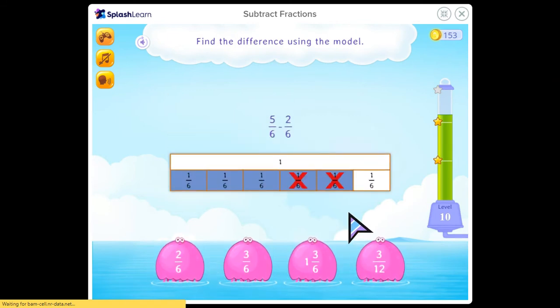Find the difference using the model. Okay, so now we have 5 sixths minus 2 sixths. The model can be kind of confusing sometimes too. So I like to focus on the equation. 5 sixths minus 2 sixths. So I'm going to focus on the numerator.